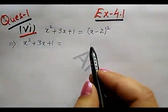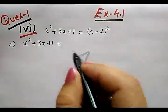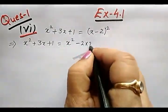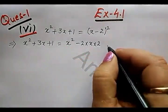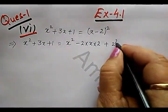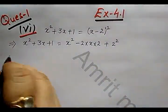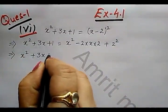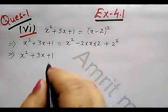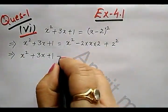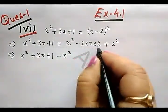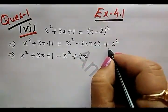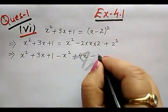Now this is in the form a minus b whole square which equals a square minus 2ab plus b square. So let us simplify this. So it is x squared plus 3x plus 1, taking all the terms to one side.